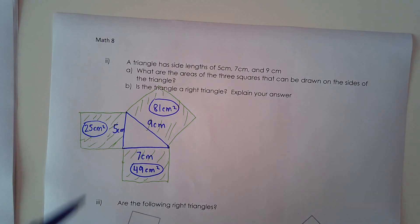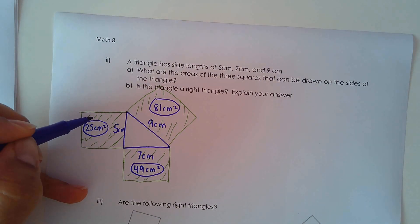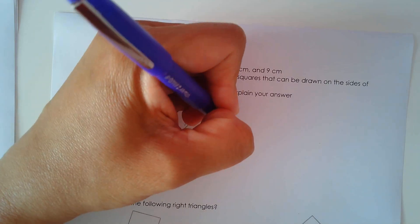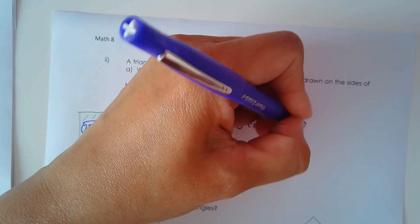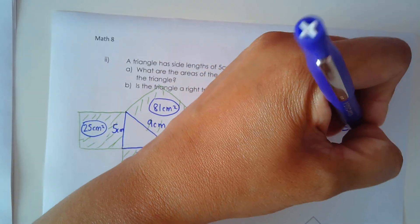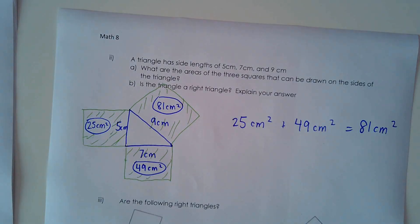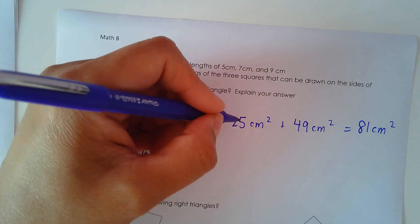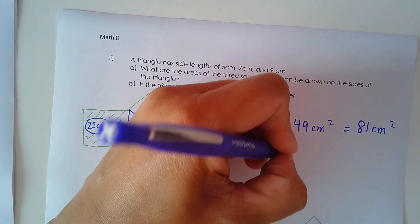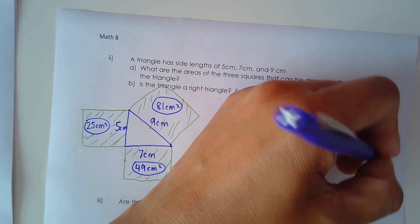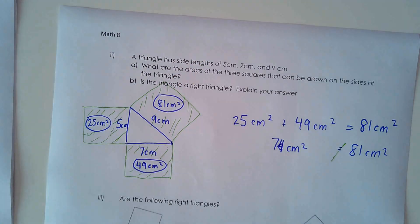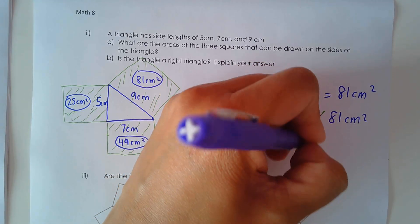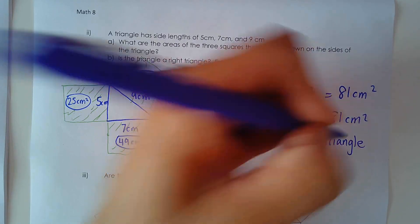Do the areas of the squares of the legs add up to the area of the square off the hypotenuse? Is 25 centimeters squared plus 49 centimeters squared equal to 81 centimeters squared? We add these up and get 74 centimeters squared, but we need 81 centimeters squared. So it is not a right triangle — still a triangle, but not one with 90 degrees.